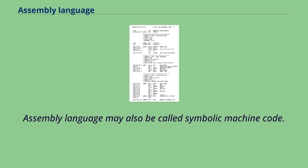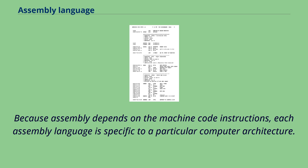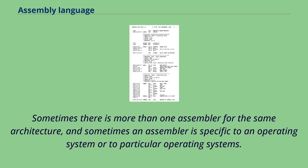The computational step when an assembler is processing a program is called assembly time. Assembly language may also be called symbolic machine code. Because assembly depends on the machine code instructions, each assembly language is specific to a particular computer architecture. Sometimes there is more than one assembler for the same architecture.